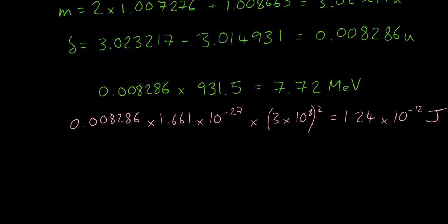Finally we can divide that number by 1.6 times 10 to the power of negative 19. And that will give us the binding energy in electron volts, which comes out at 7.7 times 10 to the power of 6 electron volts. So we get the same answer as the shortcut, we just have to do a few more calculations.